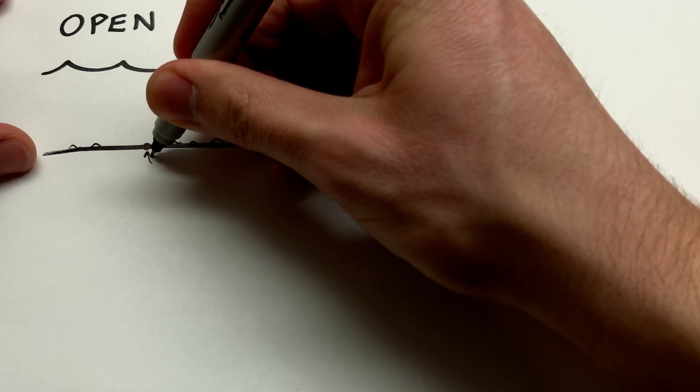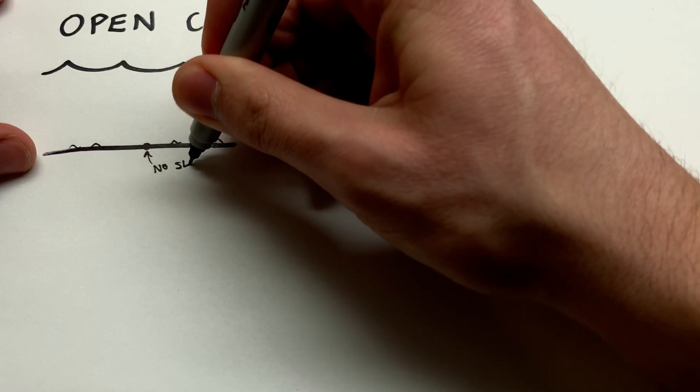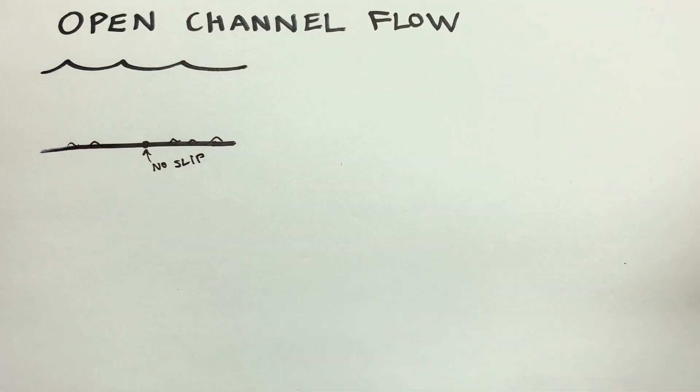But ignoring the inaccuracies of the picture, you'll have at the bottom what's called the no slip condition, which means that at the physical contact between the water and the floor, there's no velocity of the water.